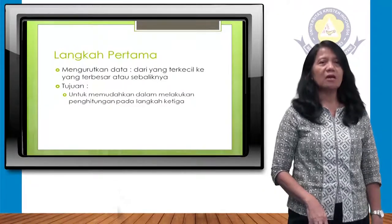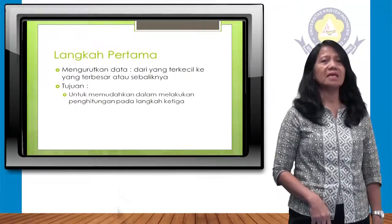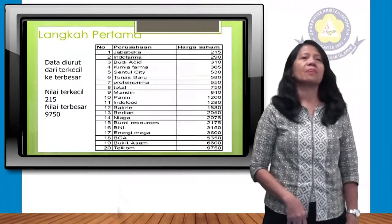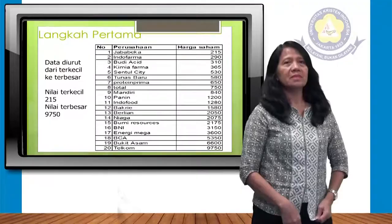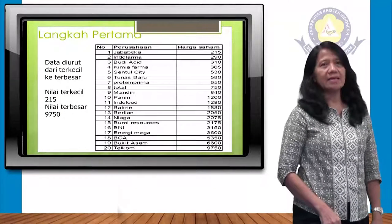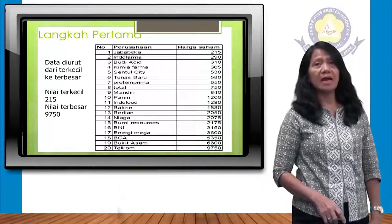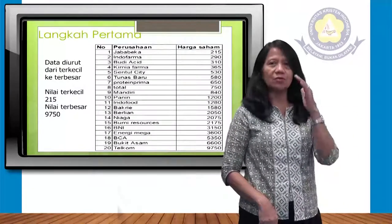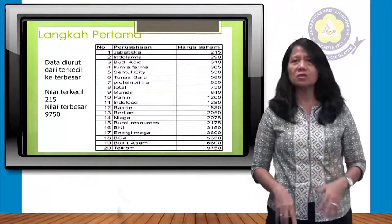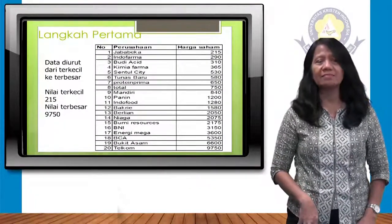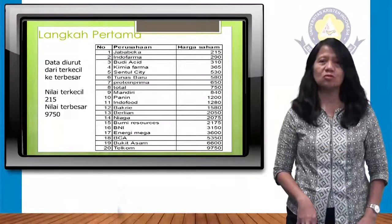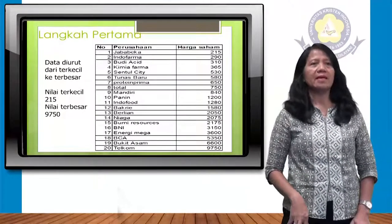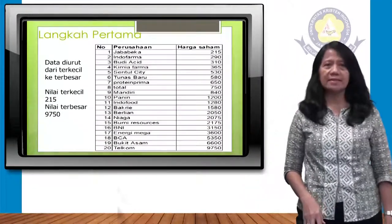Tujuannya untuk memudahkan dalam melakukan penghitungan pada langkah ketiga. Ini adalah tabel langkah pertama dari 20 perusahaan dengan harga saham, yang sudah diurutkan secara ascending dari 215 hingga yang terbesar adalah 9.750.